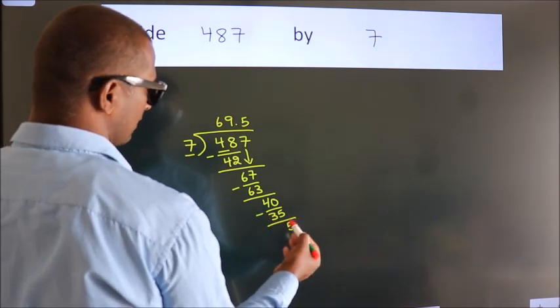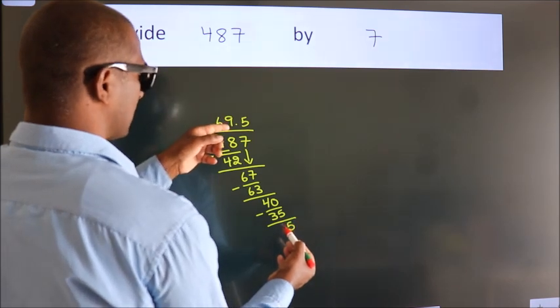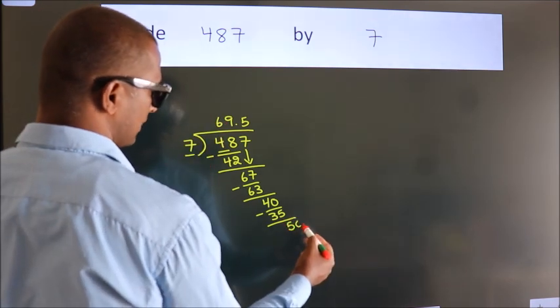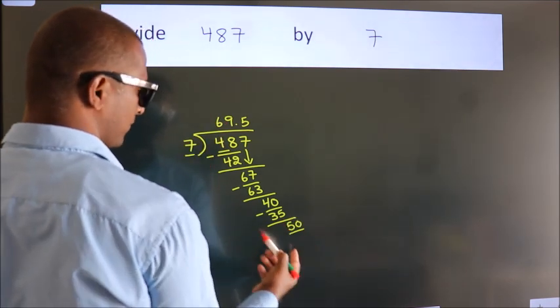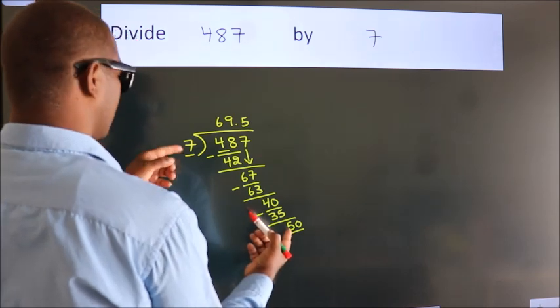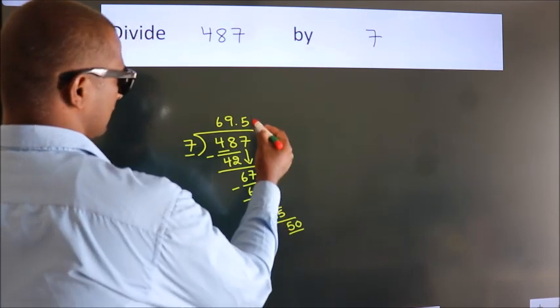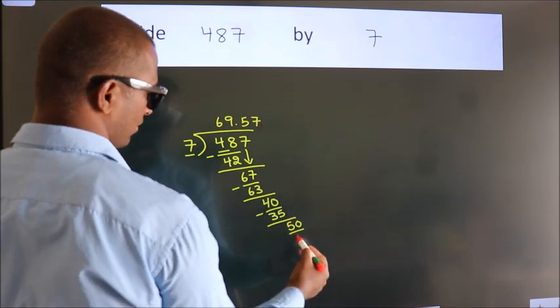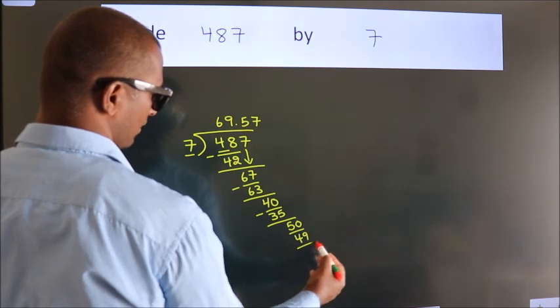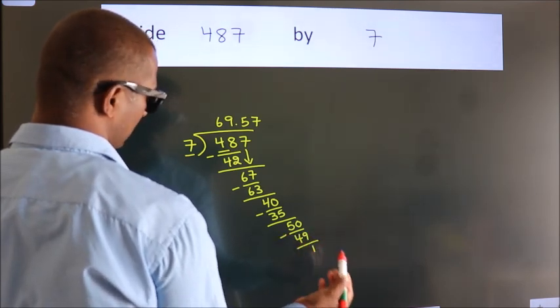After this, we already have the decimal, so directly take 0. So 50. A number close to 50 in the 7 table is 7 times 7, 49. Now we subtract, we get 1.